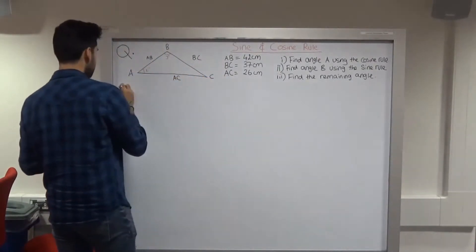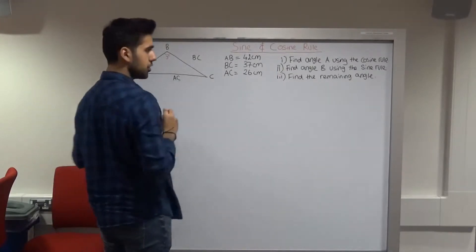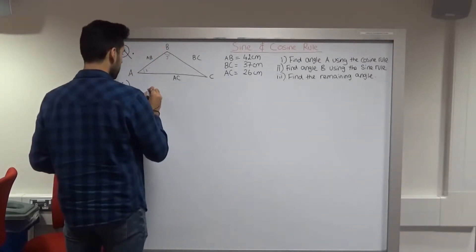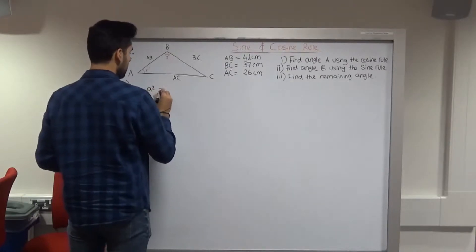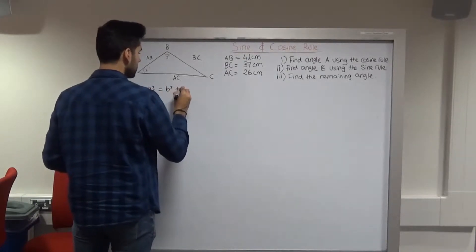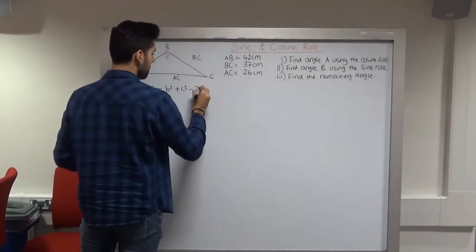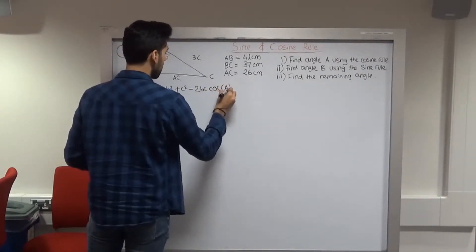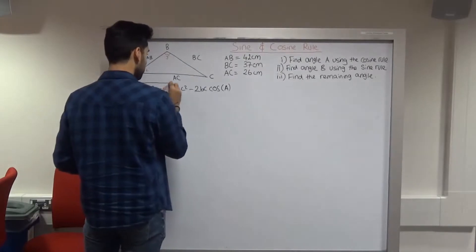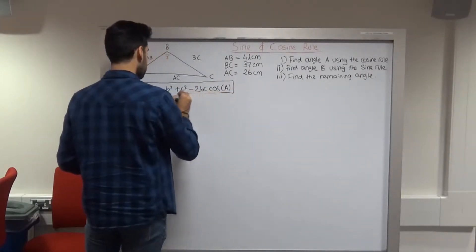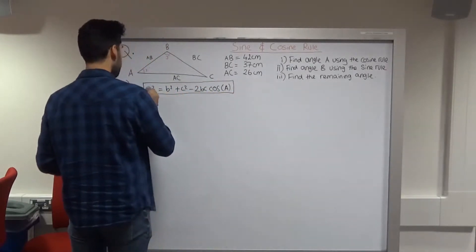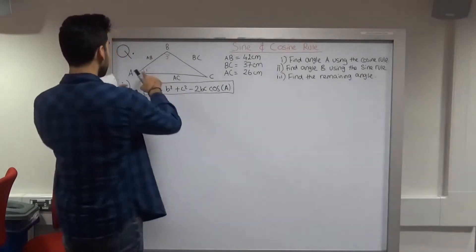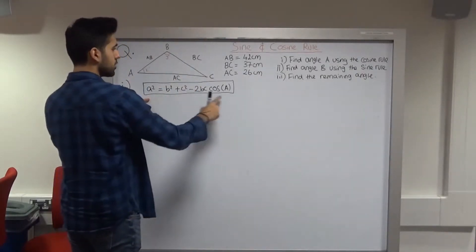So let's start off with the first part. Using the cosine rule — what is the cosine rule? The cosine rule is given as: a² = b² + c² − 2bc·cos(A). We use this formula to find angle A. The next step is labelling the sides appropriately according to this formula.